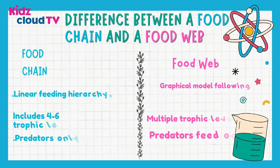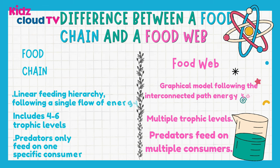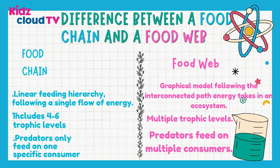Difference between a food chain and a food web: A food chain is a linear feeding hierarchy, following a single flow of energy. On the other hand, a food web is a graphical model following the interconnected path energy takes in an ecosystem. A food chain includes four to six trophic levels; similarly, food webs have multiple trophic levels. In a food chain, predators only feed on one specific consumer, but in a food web, predators feed on multiple consumers.